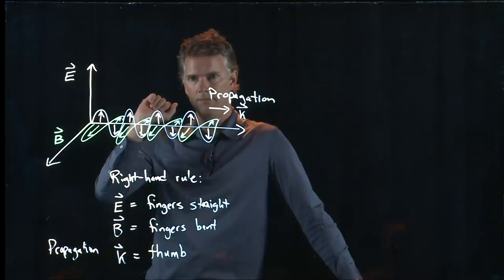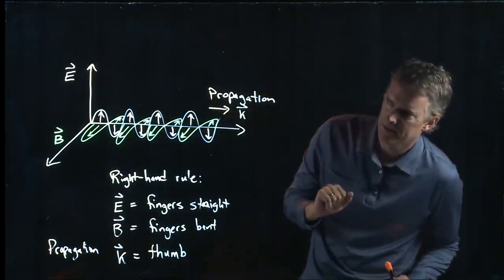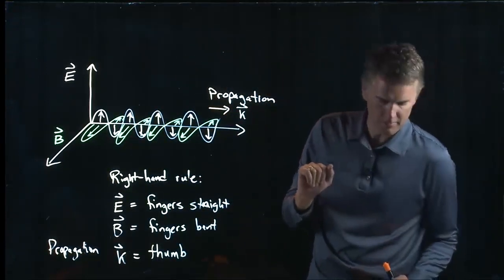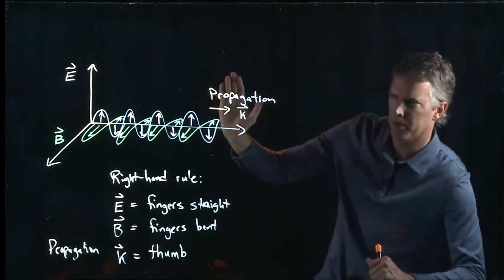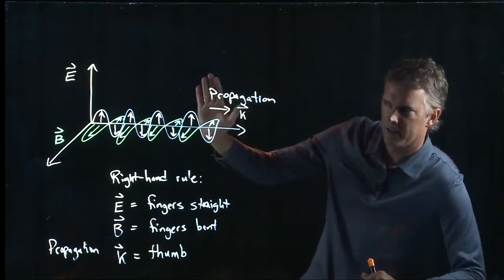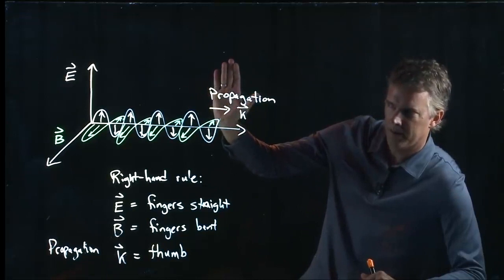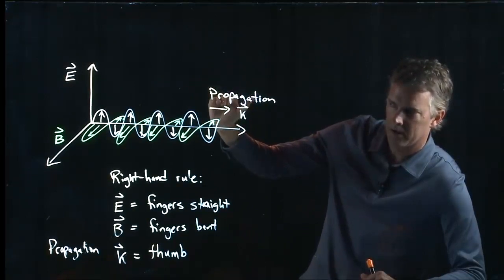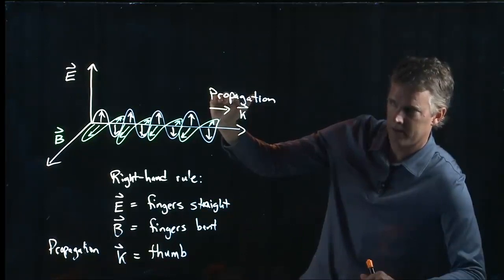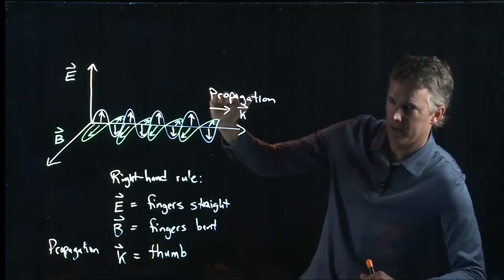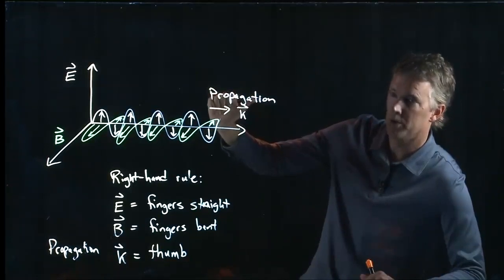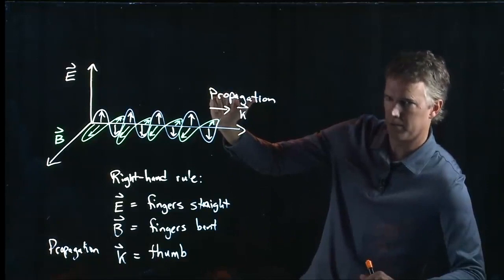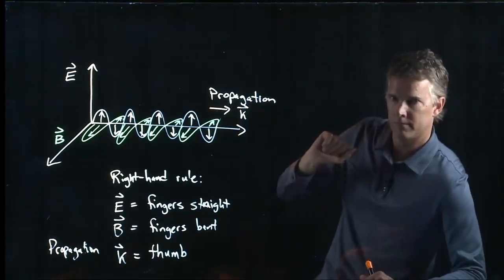No? Okay. We could have it flipped. Let me see if I can see what's going on in the computer monitor. So we've got E going up. And then B is coming out towards you guys. Is that right? Okay. And so you should get a thumb that's going to your right if you look in the computer monitor.